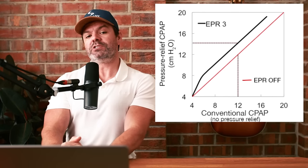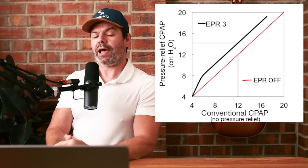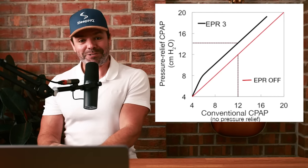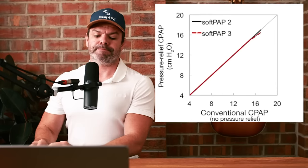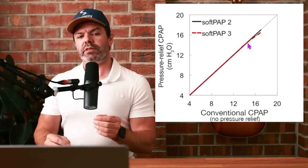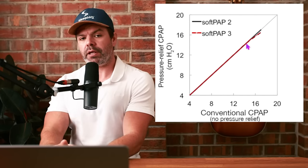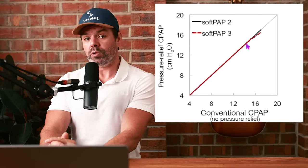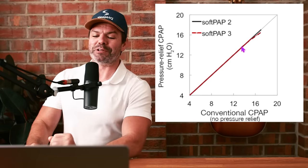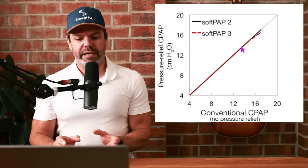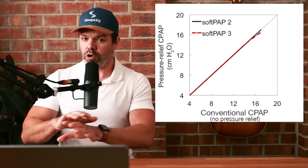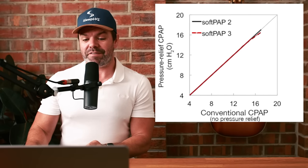What's fascinating is these researchers also took a look at some pressure relief technology from other companies, and the results are very interesting. This is the exact same pressure relief chart, but this time from a German company Löwenstein and their SoftPAP pressure relief. We can see the pressure required for apnea control with conventional CPAP, no pressure relief, is very similar